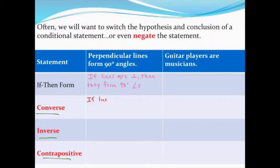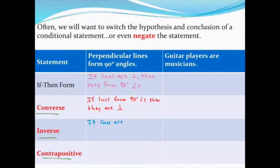The converse means you switch your hypothesis and your conclusion. It still starts with 'if' and has 'then' in the middle. For example: 'if lines form 90-degree angles, then they are perpendicular.' You can see that the if-part and the then-part have been switched.